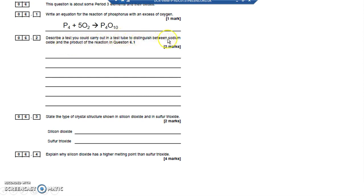Describe a test you could use to distinguish between sodium oxide, which is a white solid, and the product P4O10, which is another white solid.